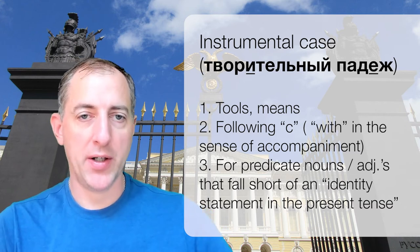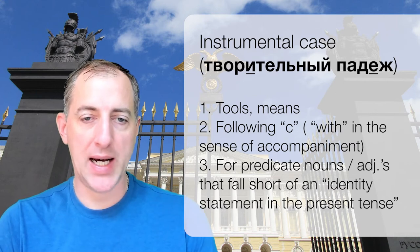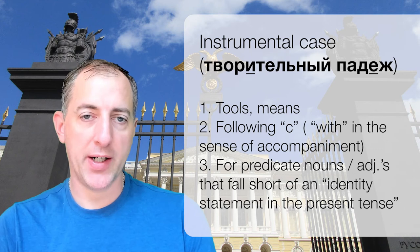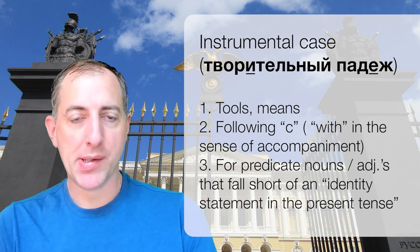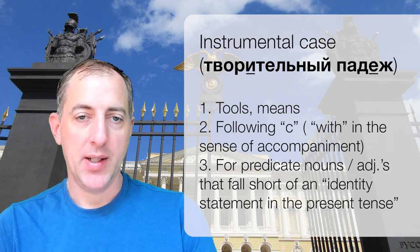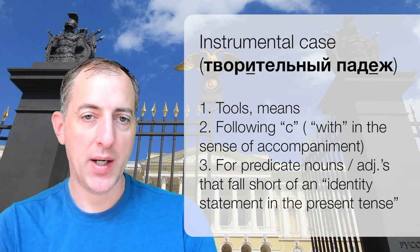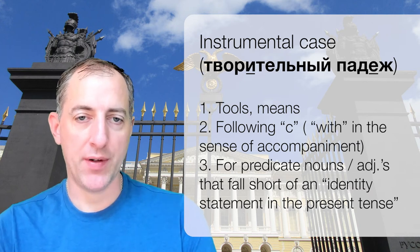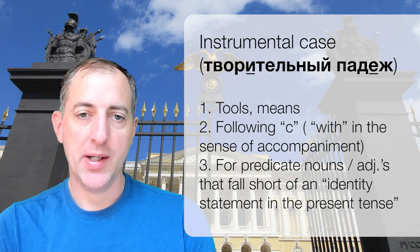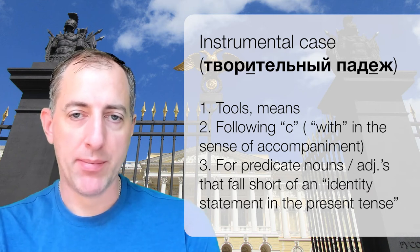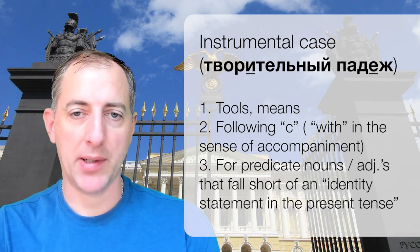Finally, let's look at the instrumental — this is a little bit trickier. The simplest meaning of the instrumental is to use something as an instrument: if you're doing something with something as a tool, that word goes into the instrumental. We also see the instrumental after the preposition с meaning 'with' — but we only use с for accompaniment, not using something as an instrument. If you're doing something with other people, you get с plus instrumental. If you've got a pizza with sausage and cheese, those aren't instruments, so you do need с plus instrumental.